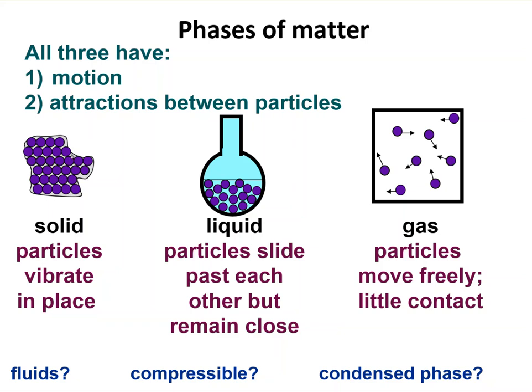So in a solid, the particles are packed closely together and they're locked in place. An atom that is right here will stay there. It won't work its way over. Unlike a liquid, they are pretty far apart and a molecule or an atom that's on one side can work its way to the other side. They're moving around, sliding past each other in contact with each other.